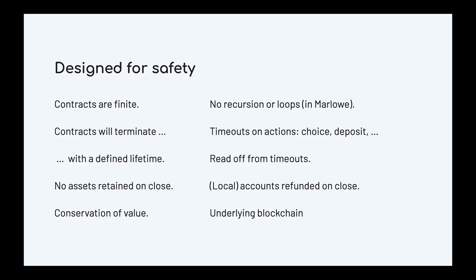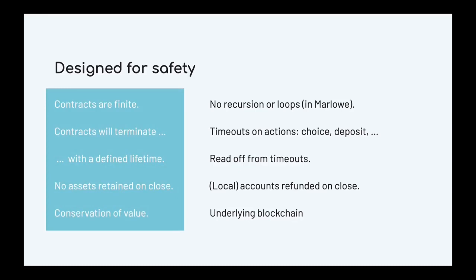Conservation of value is something we get for free from the underlying blockchain — it guarantees against double spend, so we can be sure we are getting conservation of value. These are not guarantees that exist for Plutus contracts in general. In general, a Plutus contract could go on forever and could terminate with control of a whole collection of assets which then become unreachable. These properties I'm highlighting here are safety properties — assurances we can give to Marlowe users.